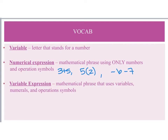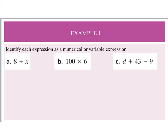Next we have variable expressions, which are mathematical phrases that use variables, numbers, and operating symbols. So I could have something like 5n, 3t minus 1, x plus 7, and so on.